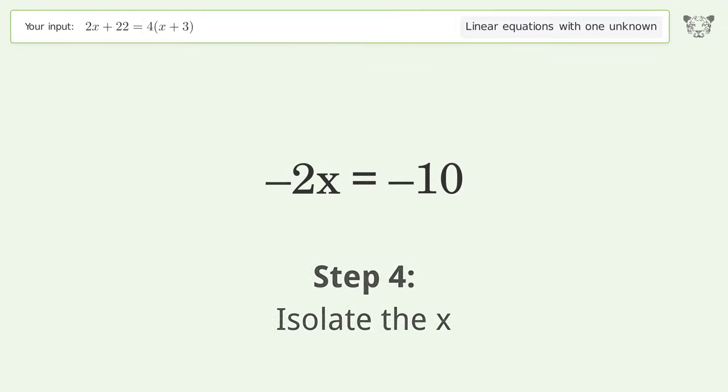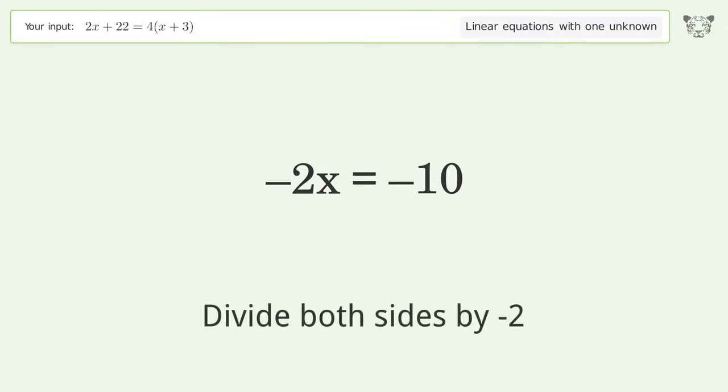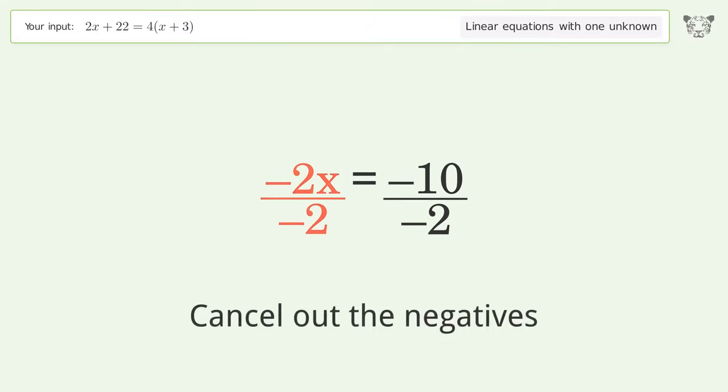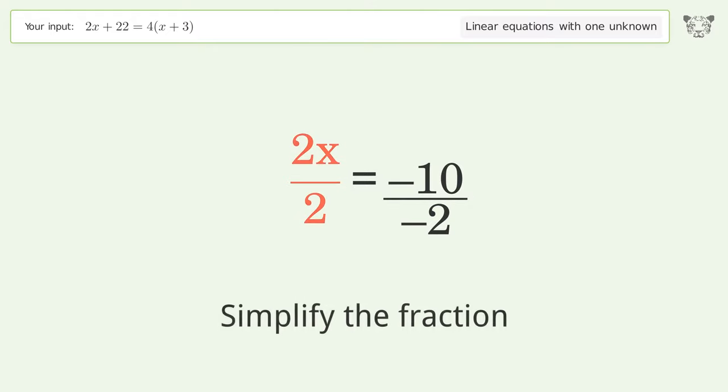Isolate the x. Divide both sides by negative 2. Cancel out the negatives. Simplify the fraction.